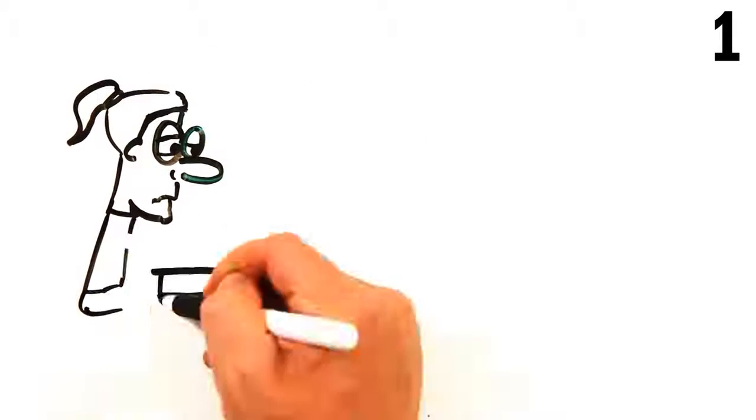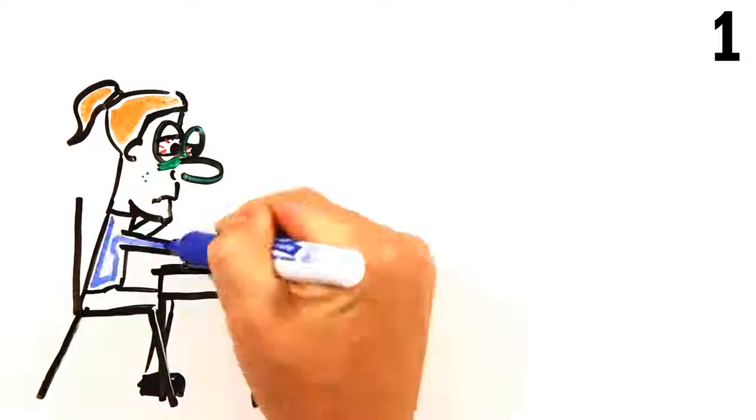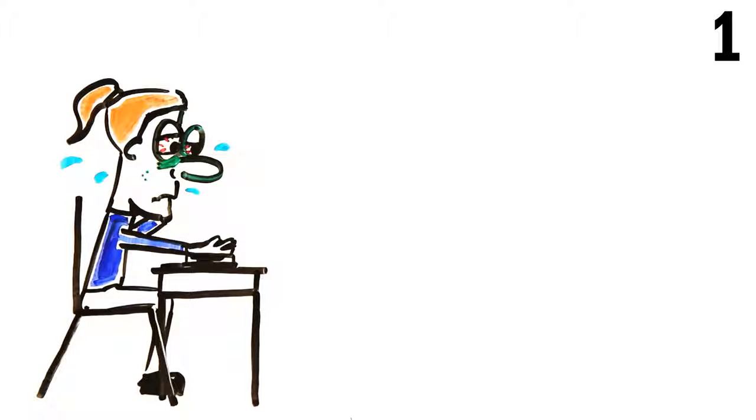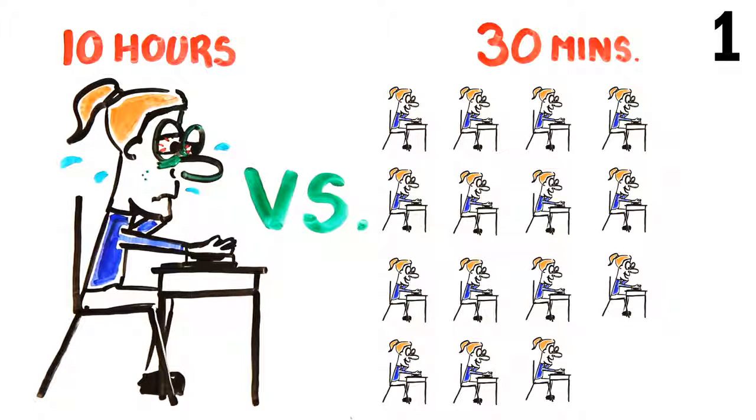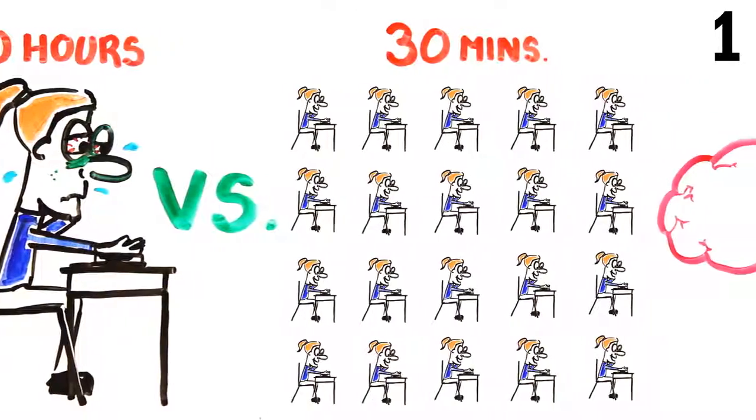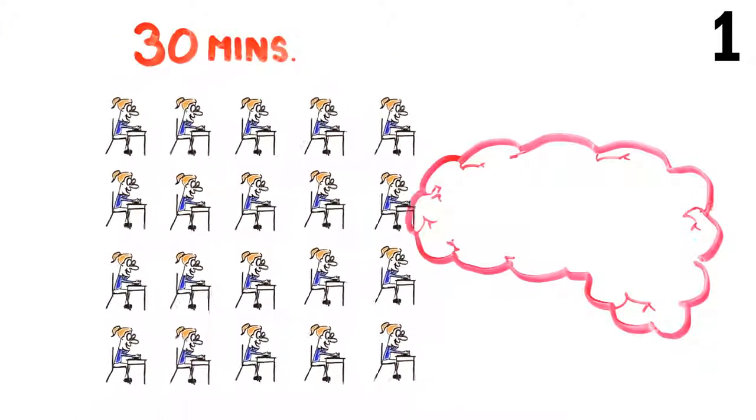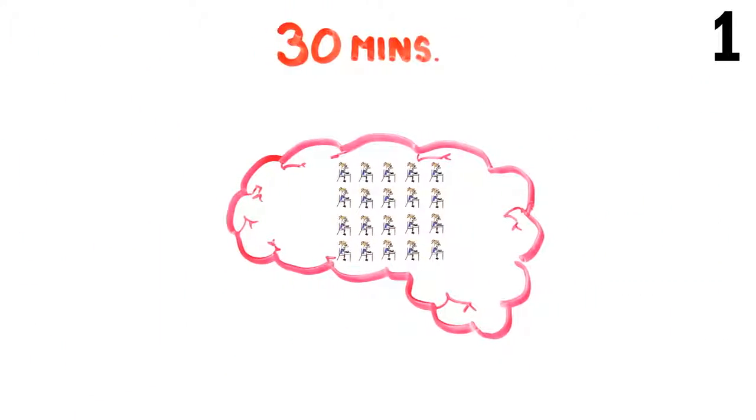First up, research shows that study sessions are most effective in small, short chunks. Instead of cramming in a 10-hour study session, it's much more effective to spread it out into 20 to 30-minute sessions over a few weeks. This is because your brain is better at encoding information into the synapses in short, repeated sessions as opposed to one large one.